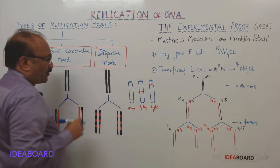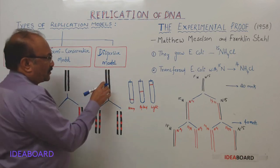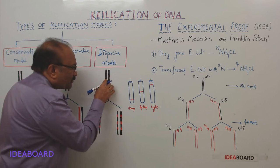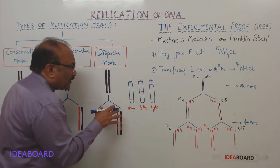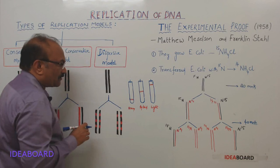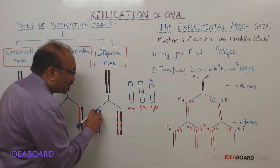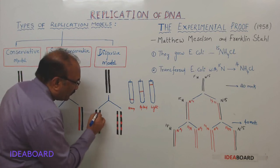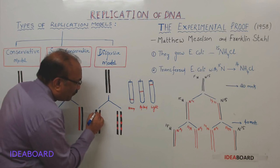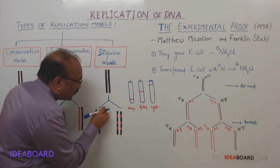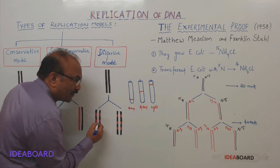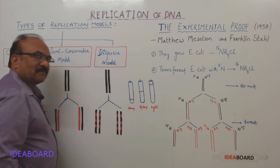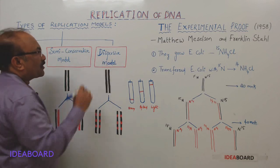When we come to the dispersive model, this is the parent DNA. Both strands of the parent DNA during replication have exchanged materials. You will find two daughter DNAs — black represents old nucleotides and red represents new nucleotides. So hybrid strands are formed here. This is called the dispersive model.